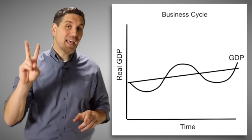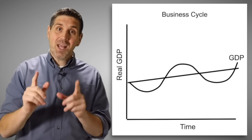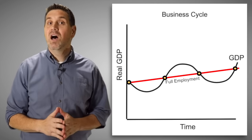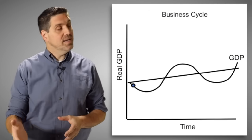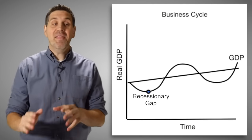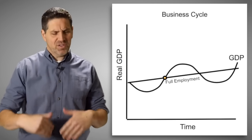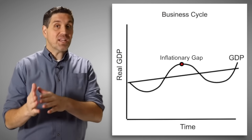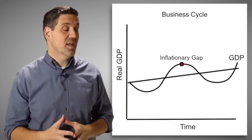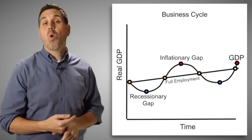All those concepts can be shown on the second graph you learn: the business cycle. The economy goes down and up over time and creates a trend line that represents full employment. When the economy experiences a recession, there's a decrease in GDP and unemployment increases — frictional, structural, and cyclical. Then there's a recovery; unemployment starts to go down and we end up at full employment with only frictional and structural. If there's even more spending, we can end up with an inflationary gap, with super low unemployment and the economy overheating. Again, the economy can only be in one of three places: a recessionary gap, full employment, or an inflationary gap.